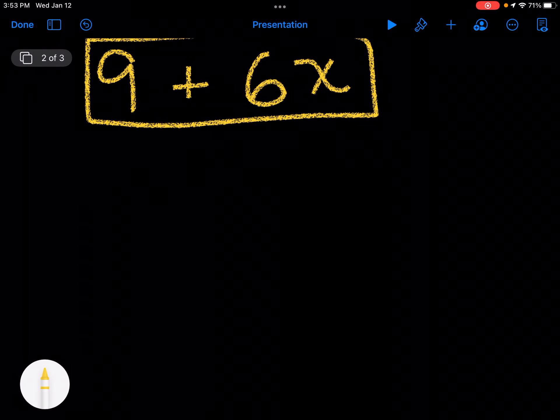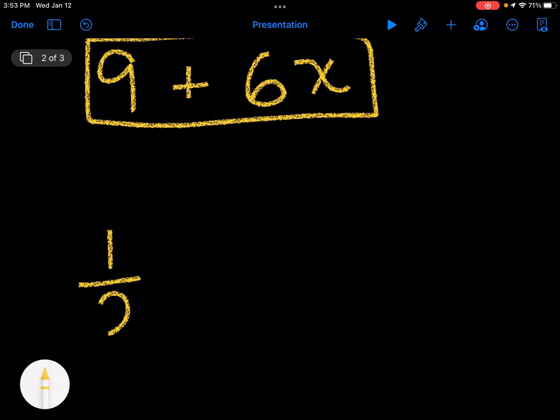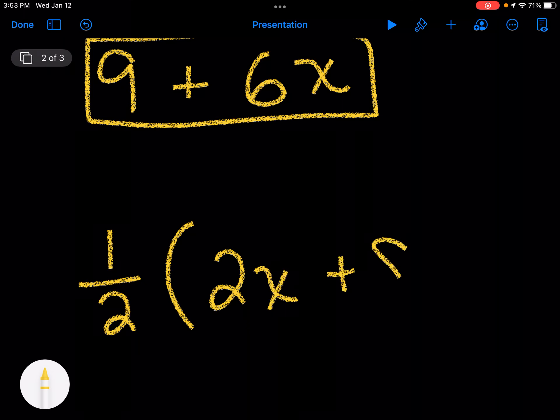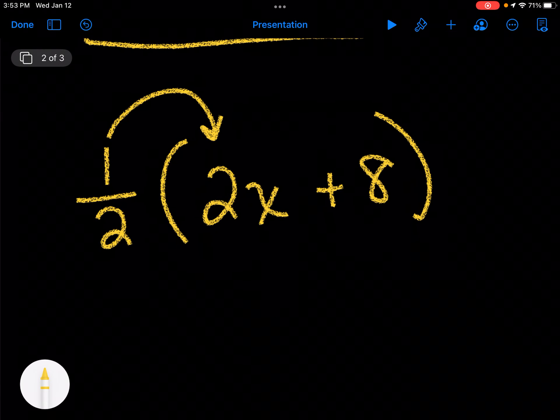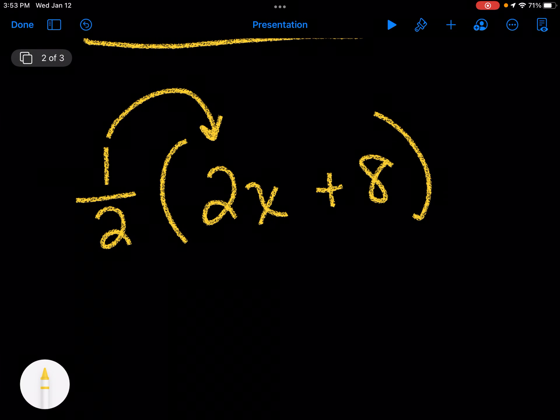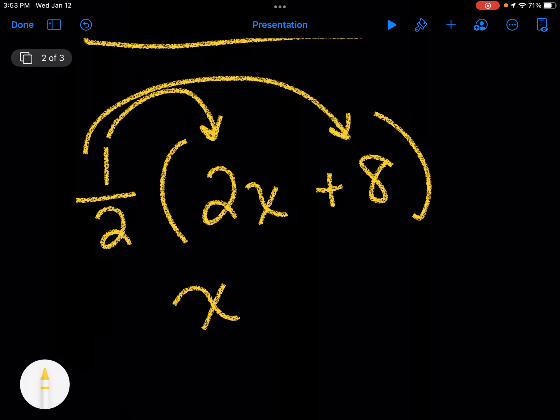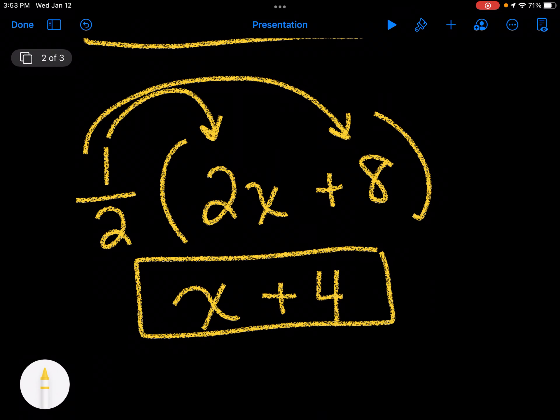So let's try another one. Let's try one with a fraction. So let's say I have 1 half times 2x plus 8. So 1 half times 2, well half of 2 is 1, so I would just have x, and then half of 8 is 4, so plus 4. So because the 4 doesn't have an x on it, it's just x plus 4.